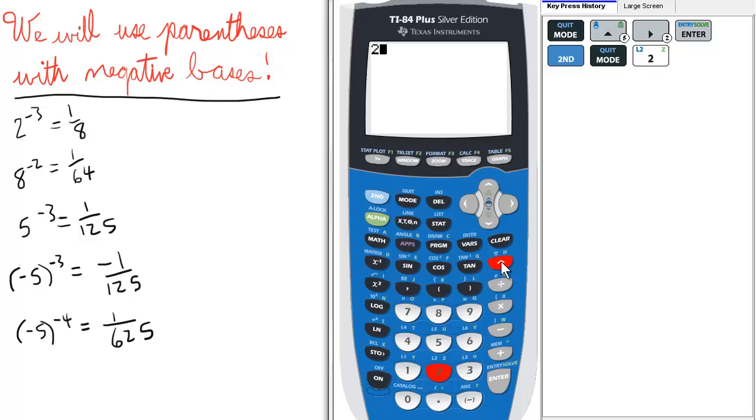So, let's raise 2 to the negative 3. 2 raised to the negative 3. Enter. 1 over 8.